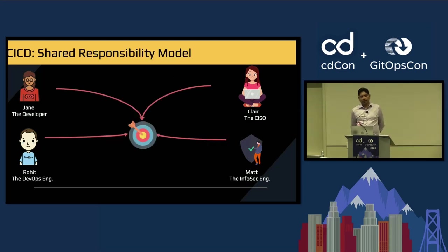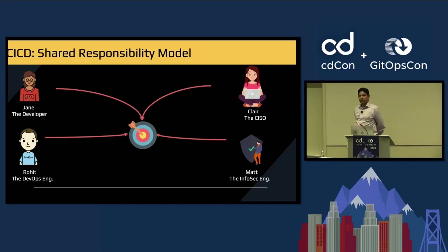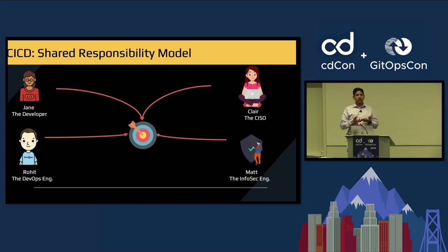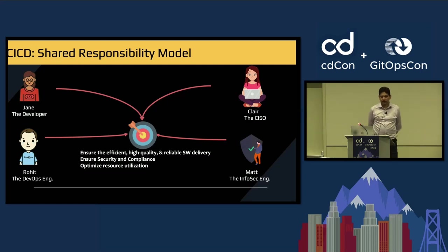After talking about the different personas, let's talk about the different types of CI/CD pipelines we may have. One is the shared pipeline, where multiple users are using the same pipeline. Then there is the modular pipeline, where you can have customized control depending on the project — that's kind of a variation of a shared pipeline. And then you can have the monorepo pipeline, where you have a single repository but multiple projects get built out of the same pipeline. One thing is common across all of these: they share common goals like ensuring efficiency, high quality and error-free software delivery, ensuring security and compliance, and optimizing resource utilization.